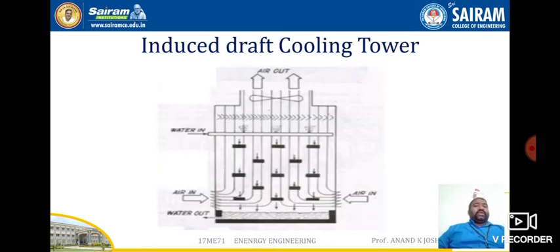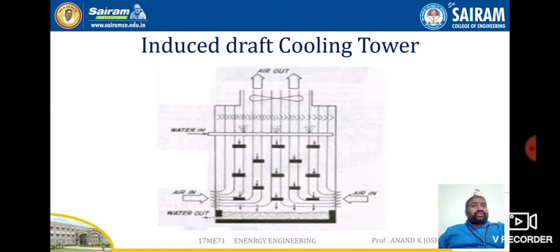In the induced draft cooling tower, the difference lies only in the supply of air. The fan is located at the top of the tower and air enters from the lower sides of the tower, as shown in the figure.